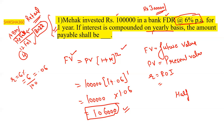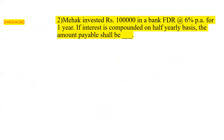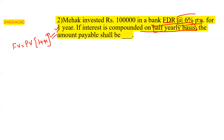Moving to question two: same question — Mahek invested rupees one lakh in a bank FDR at six percent per annum for one year, but now the interest is compounded on a half-yearly basis. Using the same formula, Future Value = Present Value × (1 + r)^n, when compounding half-yearly: the rate becomes half (r' = 3% = 0.03) and the time doubles (n = 2).